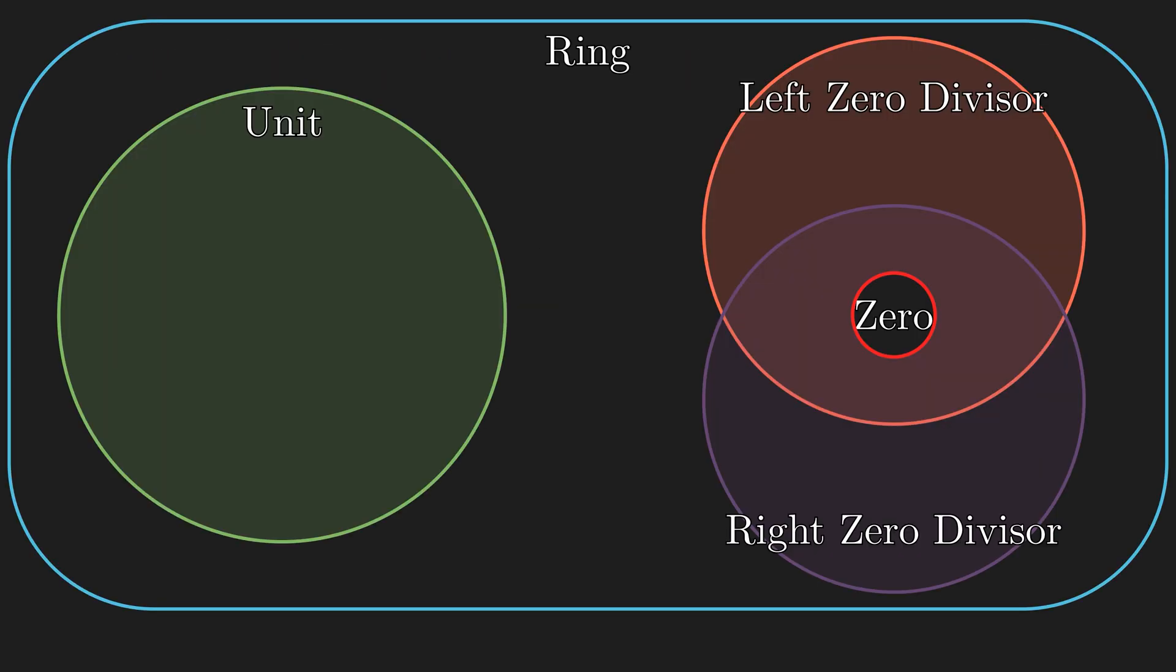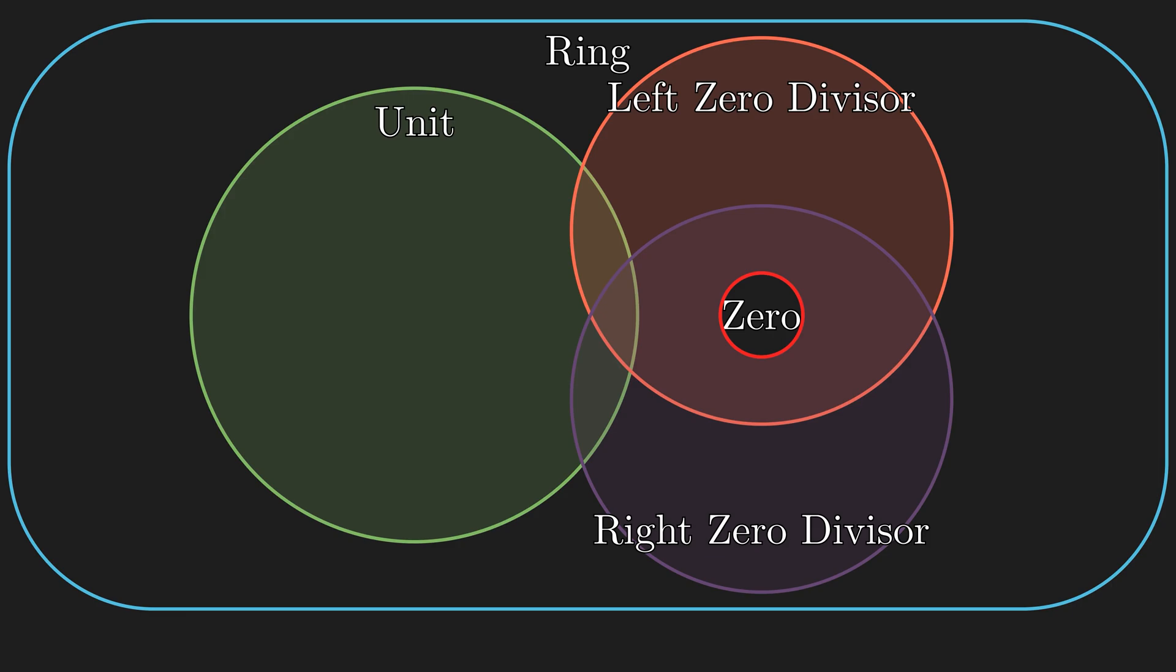So in the rings that we have seen so far, elements could be separated into units, zero divisor slash zero, or neither. But is it ever possible for an element to be a unit and a zero divisor at the same time? Maybe in some really weird ring, that is possible, right? Well the answer is no, and here is the reason why.